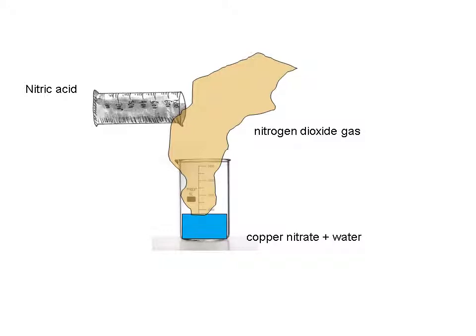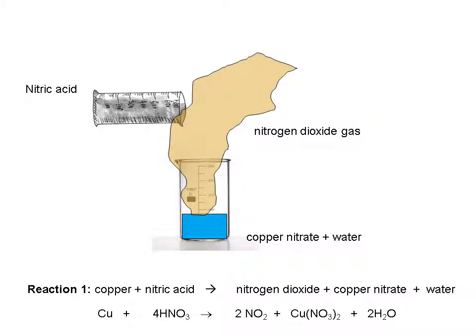The resulting products of the reaction are nitrogen dioxide gas, copper nitrate and water. We can show this in an equation where the copper and nitric acid are our reactants and the nitrogen dioxide, copper nitrate and water are our products. For those of you who like to work in symbols, here's the symbol equation. You notice that we have to have four nitric acid molecules and it will produce two nitrogen dioxide molecules and two water molecules. This is all about our balancing equations.